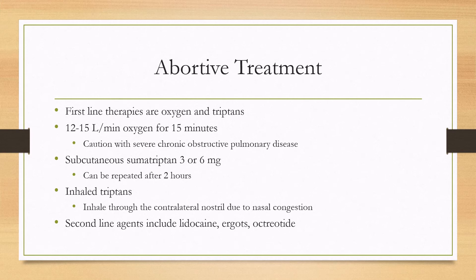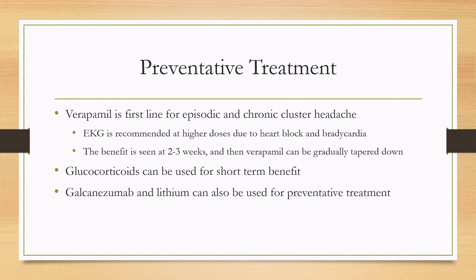Second-line agents include lidocaine, ergots, and octreotide. For preventative treatment, verapamil is first-line for both episodic and chronic cluster headache. At higher doses, an EKG is recommended due to the risk of heart block and bradycardia. Benefit from verapamil is seen at two to three weeks, after which it can be gradually tapered for episodic cluster headaches. While waiting for verapamil to work, glucocorticoids can be started for short-term benefit.